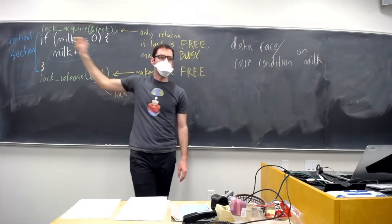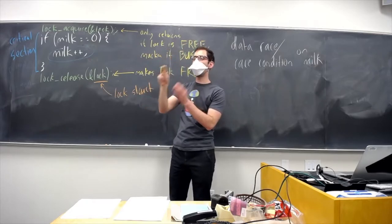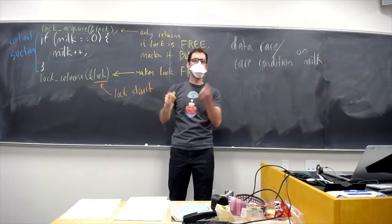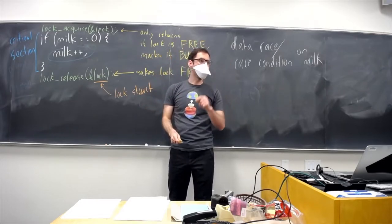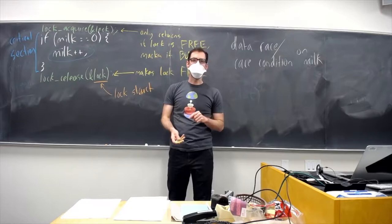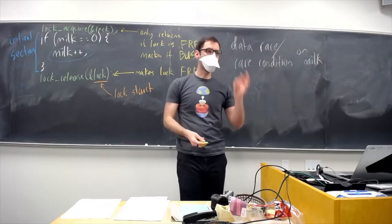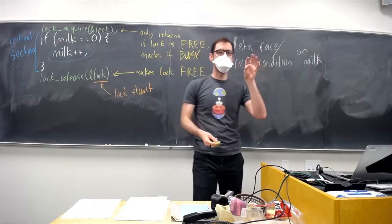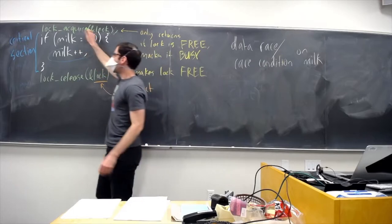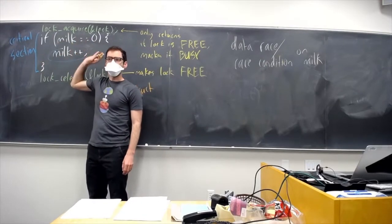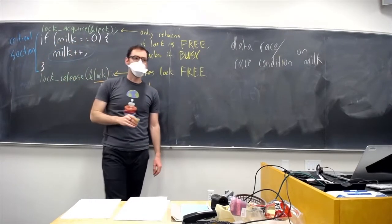The critical section is the region of code that we need to make sure only one thread can be in at a time, because if multiple threads are allowed to simultaneously be in the critical section, that's where problems occur.